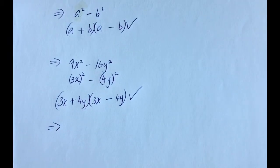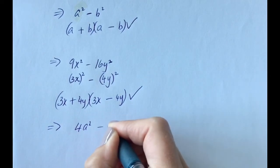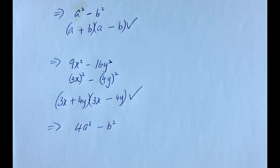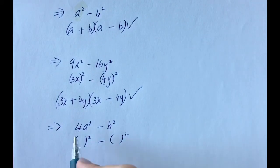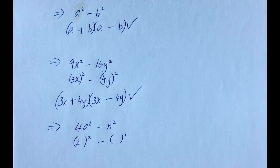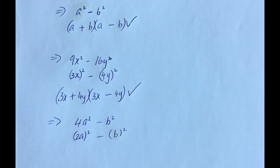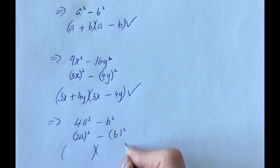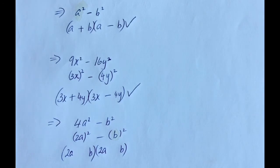Let's try 4a squared minus b squared. The square root of 4 is 2, because 2 times 2 is 4. The square root of a squared is a. And b squared is b all squared. Open up the brackets: put in 2a — 2a times 2a is 4a squared — and b times b is b squared. We need a plus and a minus for that middle term to have cancelled.